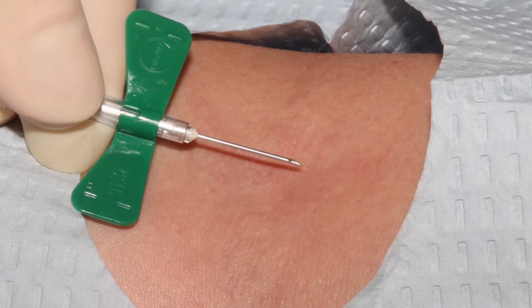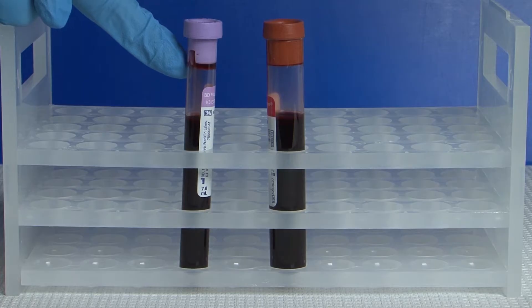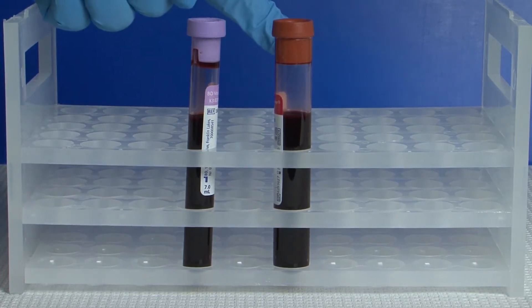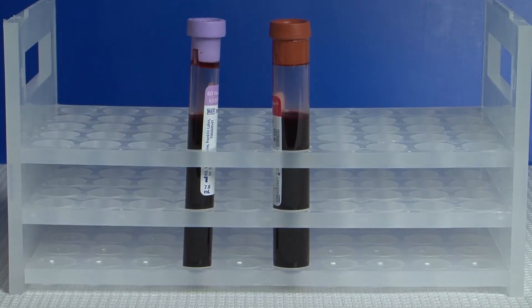These blood samples are typically those obtained upon admission to labor and delivery, such as a lavender top tube, generally used to obtain complete white blood cell counts, hemoglobin, and hematocrit, as well as a red top tube, which is generally collected for blood type and cross-matching.